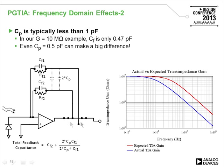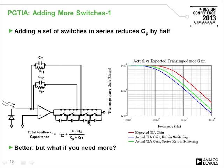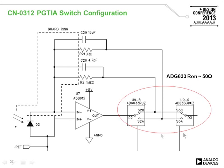You can add extra switches to reduce the stray capacitance effect further, since capacitors in series have lower total capacitance. We found that using the Kelvin switching configuration with four switches worked with good success and minimum problems. These are the actual values used in reference design CN312.